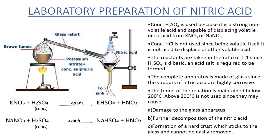Concentrated hydrochloric acid is not used because it is volatile itself — a volatile acid cannot displace another volatile acid from its salt. The reactants — potassium nitrate or sodium nitrate and concentrated sulfuric acid — are taken in a 1:1 ratio because sulfuric acid is a dibasic acid with two replaceable hydrogen atoms, and an acid salt (KHSO4) is required to be formed, not the normal salt.